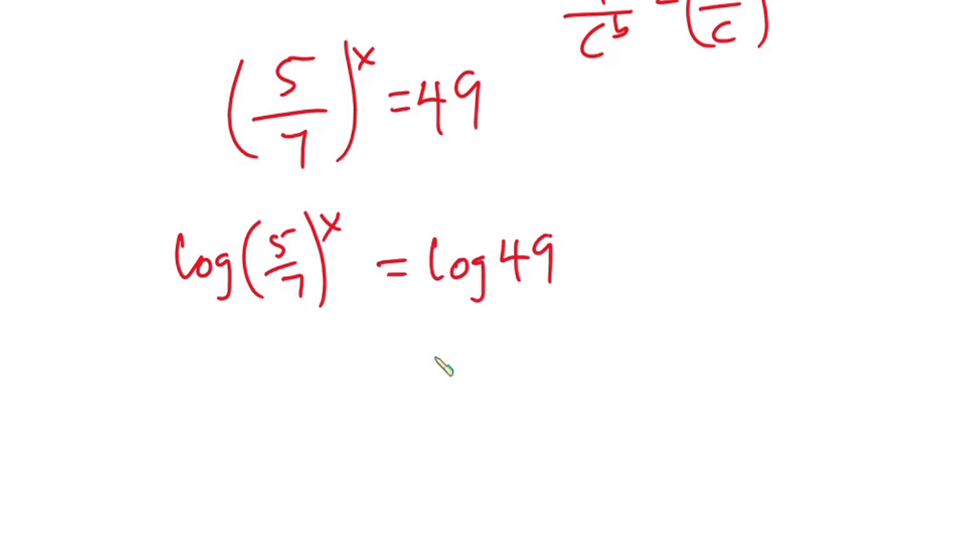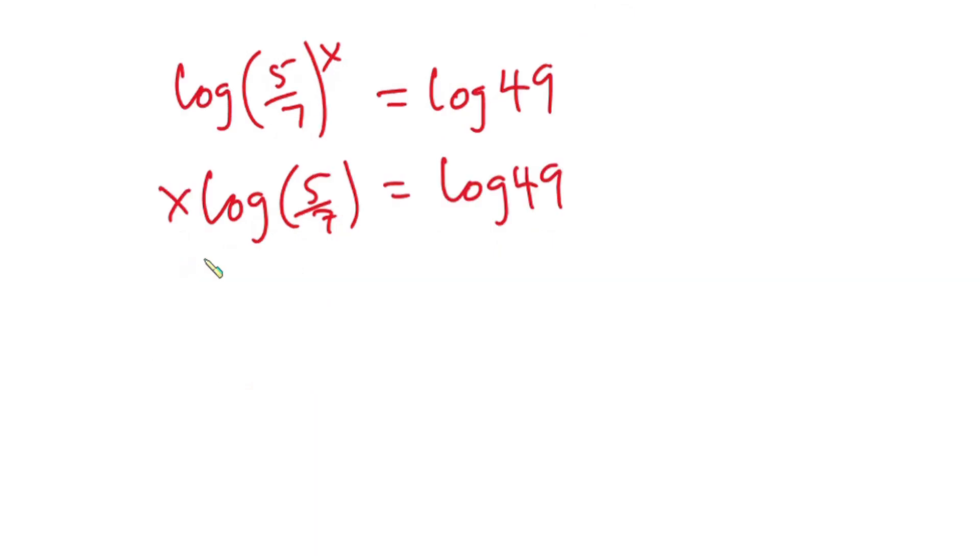And don't forget this is in base 10. So we have x log(5/7) equals log 49, and this is the same as x times (log 5 minus log 7) equals to...